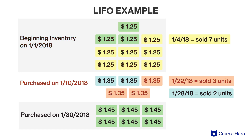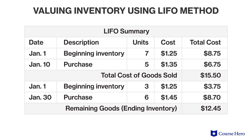By the time the company sold three units on January 22nd, it had eight units in inventory — three remaining from beginning inventory and five purchased on January 10th. Since the company is using LIFO, the most recent three units are deemed sold first: those purchased on January 10th at $1.35 each. There are now five units in remaining inventory — three from beginning inventory and two from the January 10th purchase. By the time the company sells two units on January 28th, the most recent units are again from January 10th at $1.35, since the January 30th purchase had not yet occurred. The cost of goods sold under LIFO comprises all units purchased on January 10th and seven units from beginning inventory, while ending inventory is made up of three units from beginning inventory and all six units purchased on January 30th.